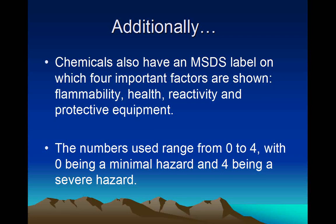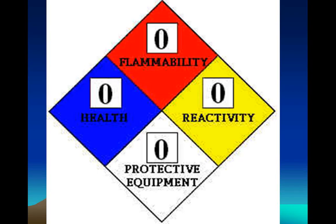Additionally, chemicals also have an MSDS label on which four important factors are shown: flammability, health, reactivity, and protective equipment needed. On the first three, the numbers used range from 0 to 4, with 0 being a minimal hazard and 4 being a severe hazard. Here's an example of one type of label. As you can see, this chemical has a minimal hazard risk in all four categories. The 0 on protective equipment means that no protective equipment is required. There are also letters used, and on the next example I'll explain what that means.